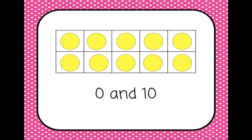The reason that friendly numbers are important is for when we get to bridging ten. You don't need to worry about that strategy right now, but you're going to be using bridging ten for addition and subtraction — especially when we get to double digit addition and subtraction. Knowing the friendly numbers is really, really important.